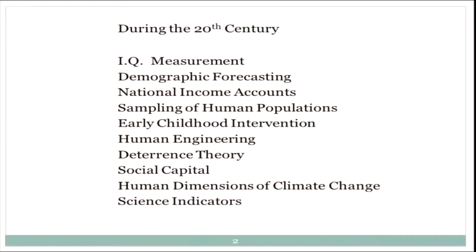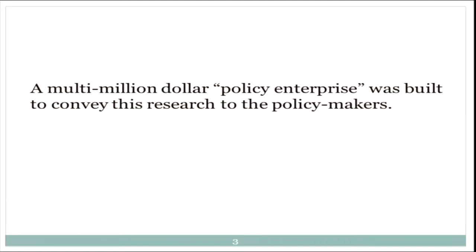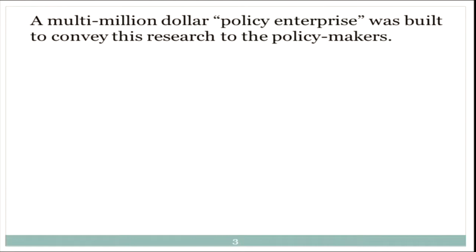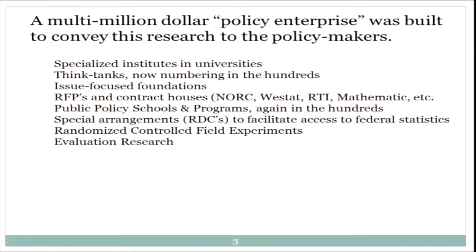The issue for me is what is the nature of the tension between science and policy, and why is it there, and what have we done about it? Part of the reason for that tension is a failure of the social sciences, and I will talk about that failure. During the 20th century, the social sciences made tons of major breakthroughs. And especially after the Second World War, we began to build what I would describe as a policy enterprise — to take the results of all of this good science and hand it over to the policymakers. That enterprise includes things like specialized institutes, think tanks, foundations, RFPs, contract houses, and public policy schools.